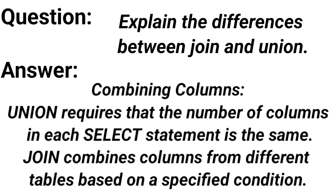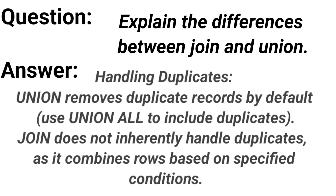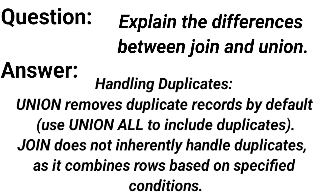Regarding combining columns: UNION requires that the number of columns in each SELECT statement is the same, while JOIN combines columns from different tables based on a specified condition. And last but not least, handling duplicates: UNION removes duplicate records by default — if you don't want that, use UNION ALL. JOIN does not inherently handle duplicates, as it combines rows based on specified conditions.